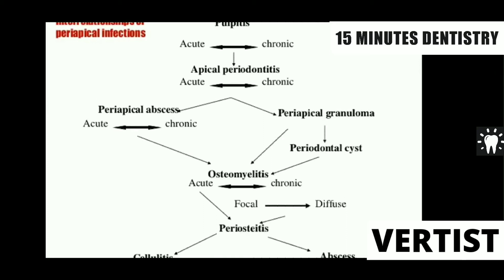The sequelae of pulpitis will depend upon three factors — always remember, this is always asked in the viva. Number one is the virulence of the organism. Number two is the local immunity or defense mechanism of the individual. Number three is the functioning of the tooth. Depending upon these three factors, the sequelae of pulpitis is determined.